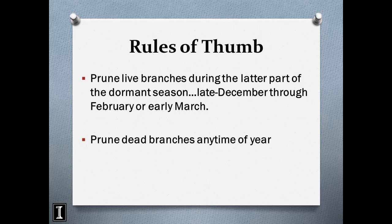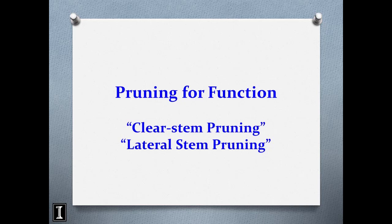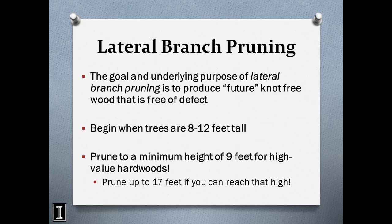Pruning for function — also called clear stem pruning or lateral stem pruning — is pruning for the potential of saw logs or veneer logs. We're trying to produce future wood that is free of defect. I typically recommend lateral branch pruning when trees are about 8 to 12 feet tall. Prune to a minimum height of 9 feet for high-value hardwoods. If you're going to prune up to 9 feet, your tree needs to be at least 18 feet tall — you cannot remove more than 50% of the live crown.